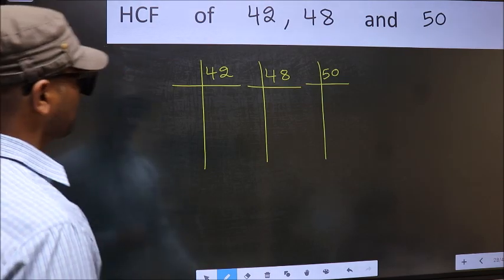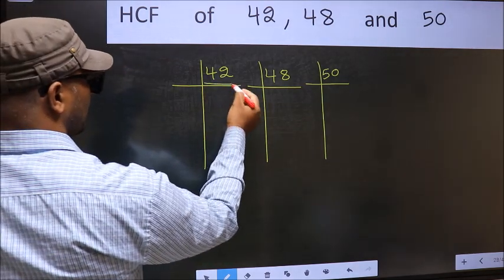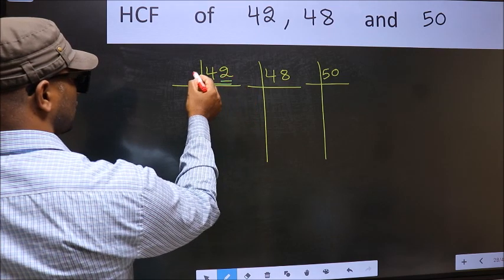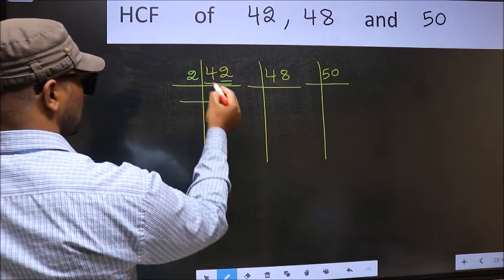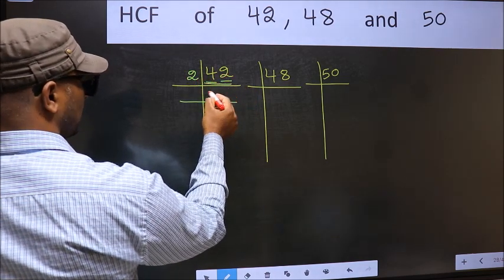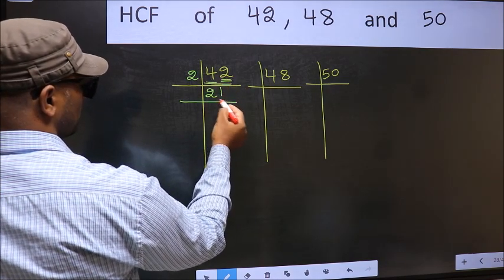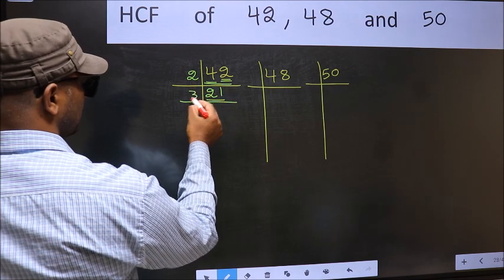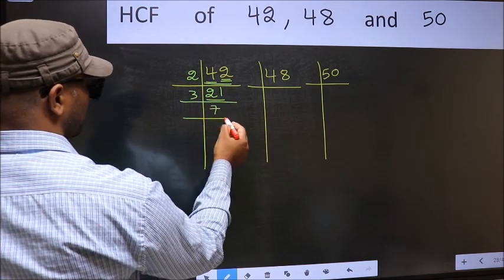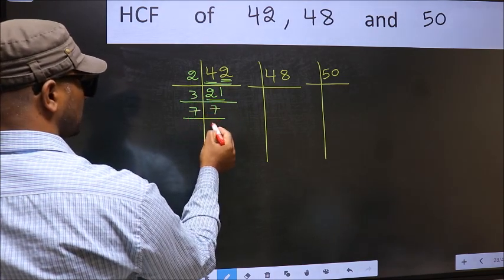Next. In this number, last digit 2 is even, so take 2. First number 4. When do we get 4 in 2 table? 2 twos, 4. The other number 2. When do we get 2 in 2 table? 2 ones, 2. Now 21 is 3 sevens, 21. 7 is a prime number, so 7 ones, 7.